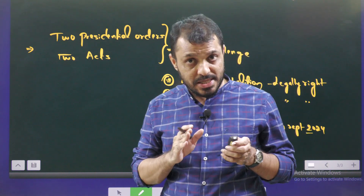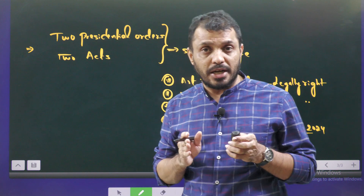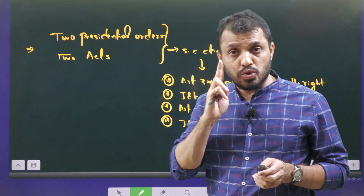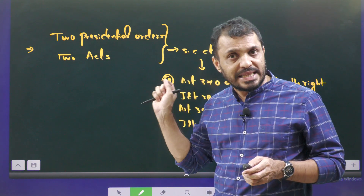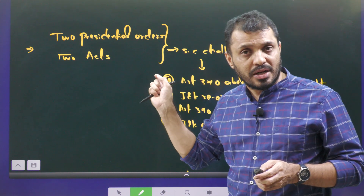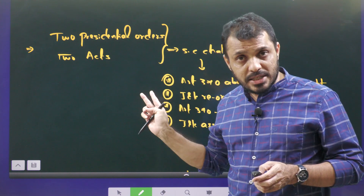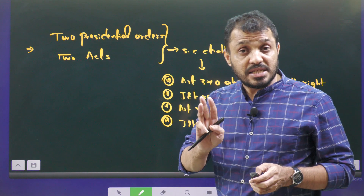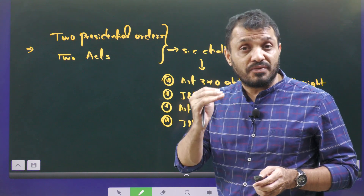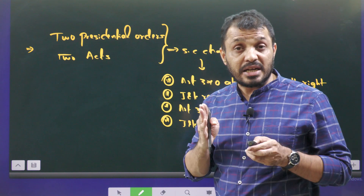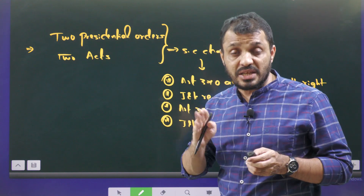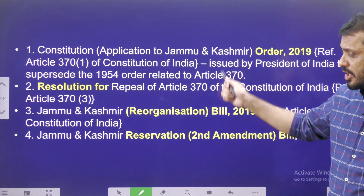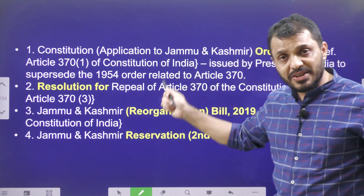In 2019, the government of India issued two presidential orders and enacted two acts. One presidential order abolished Article 370 and the other abolished Article 35A. One act bifurcated Jammu & Kashmir into J&K and Ladakh. The other act allowed the extension of reservations — such as those under Articles 15 and 16, including EWS reservation — to Jammu & Kashmir. All four of these actions were later challenged in the Supreme Court as constitutionally invalid.